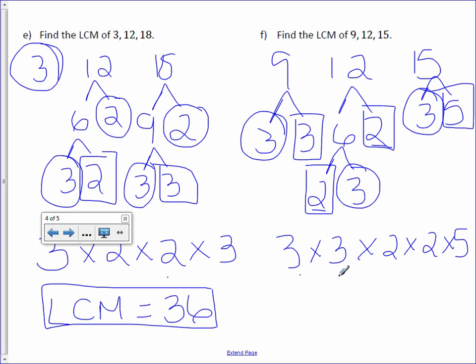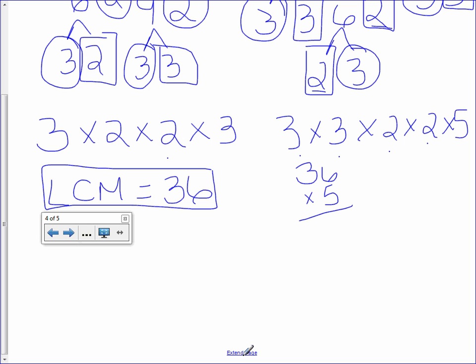3 times 3 is 9, times 2 is 18, times 2 is 36, and 36 times 5. 6 times 5 is 30, 5 times 3 is 15, plus 3 is 18. So the LCM is 180.